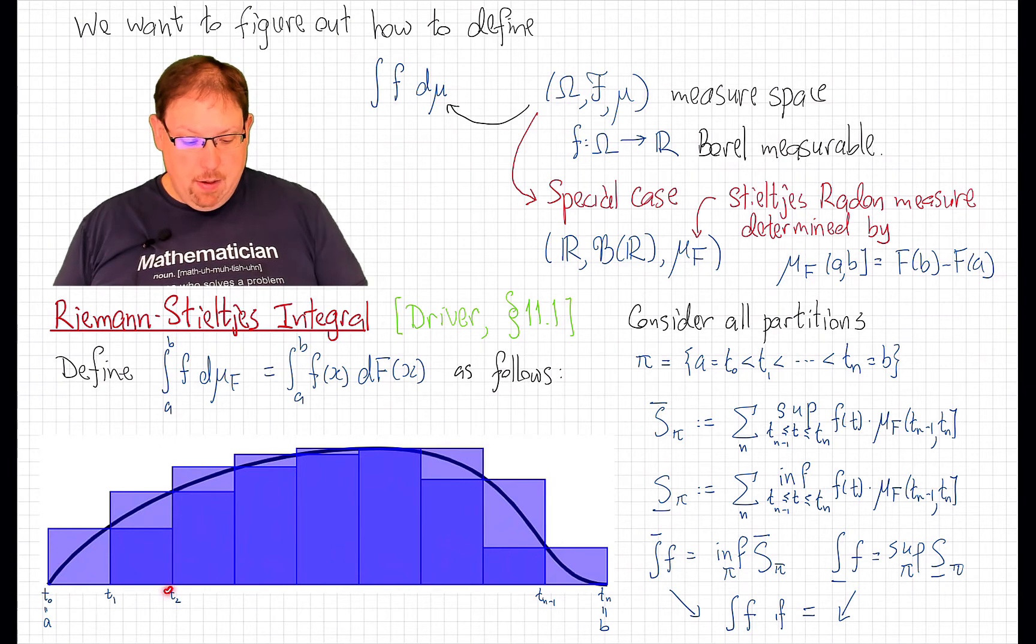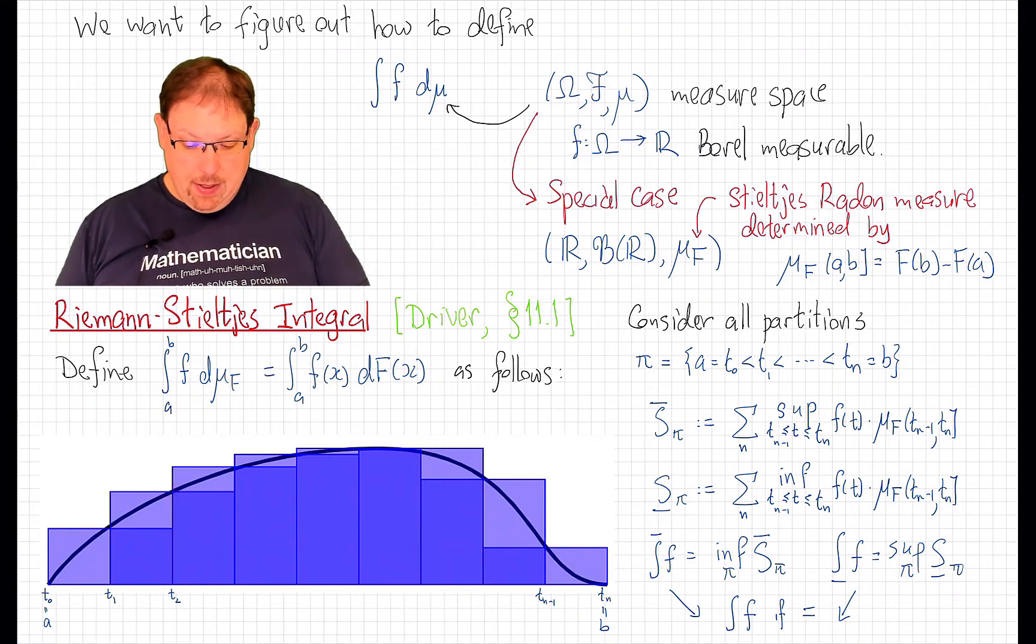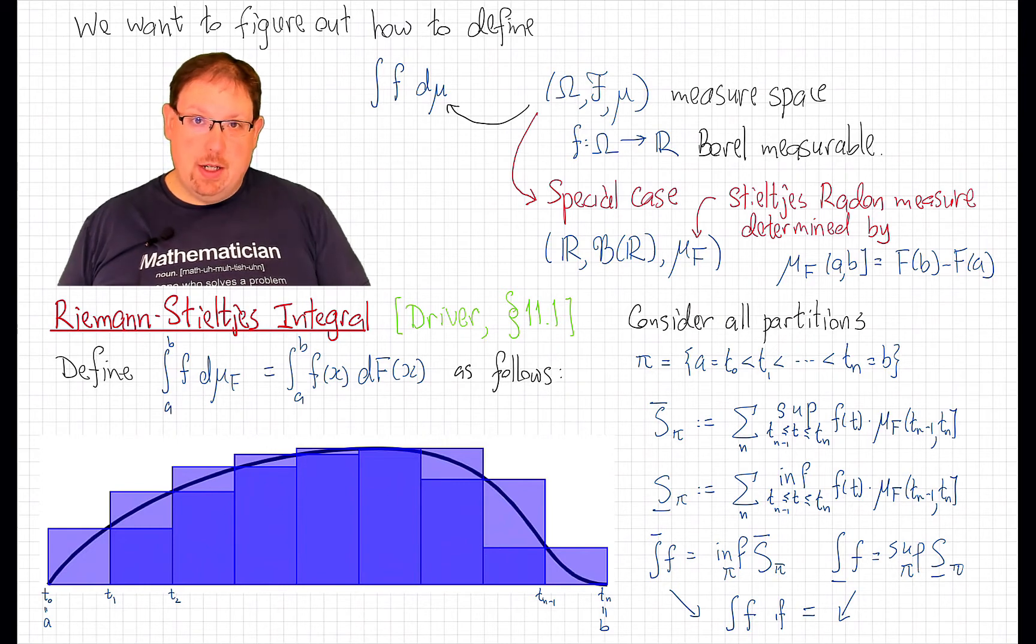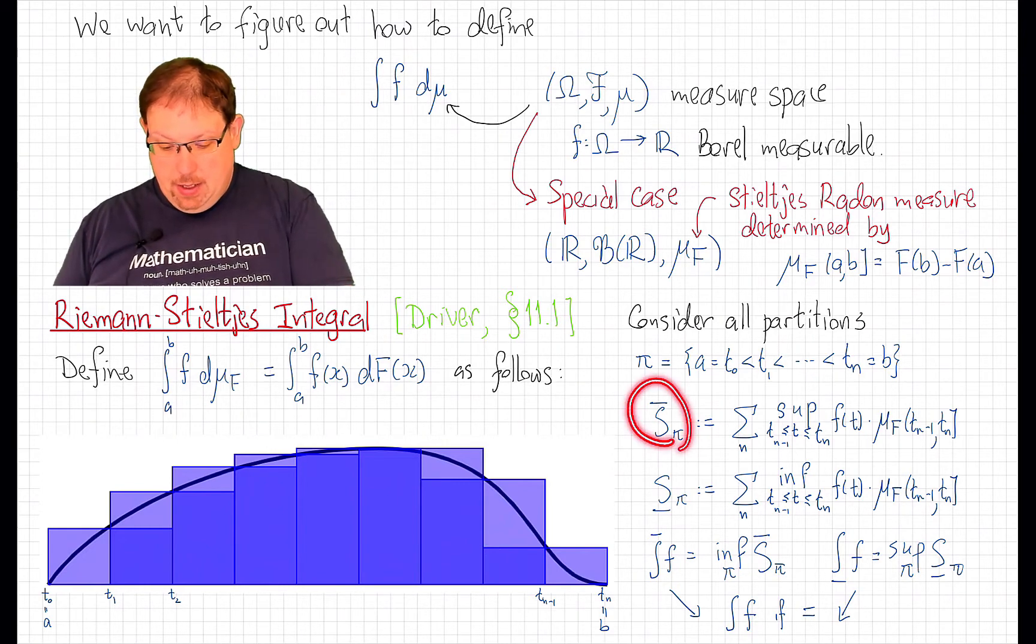And then, on each of the partition intervals, you look at the infimal value of the function and the supremal value of the function. And that gives you two approximations of what the integral ought to be.